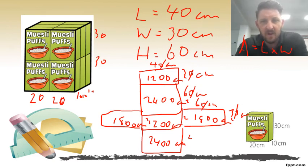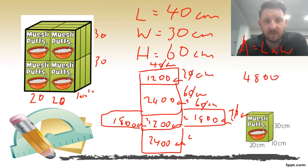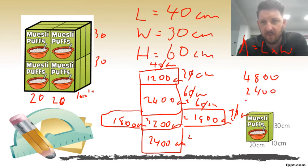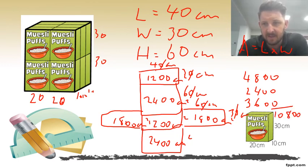We need to add all of those up. Two lots of 2400 is 4800. Two lots of 1200 is 2400. Two lots of 1800 is 3600. If I add those up — 4800 plus 2400 plus 3600 — I get 10,800... centimeters squared.